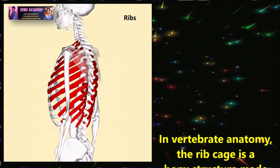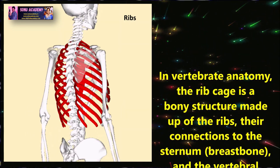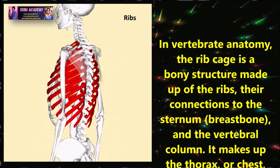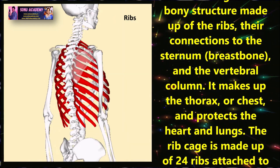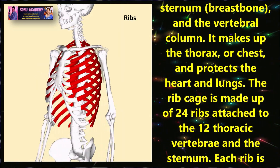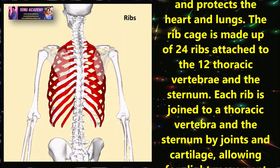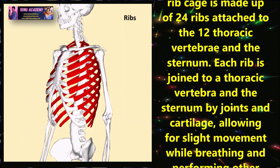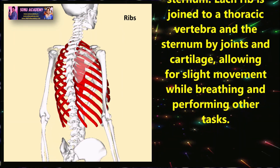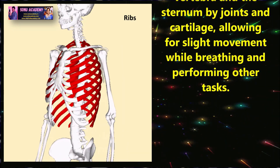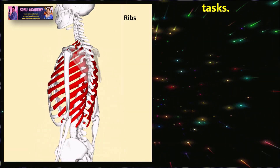Children, let us discuss about ribs. In vertebrate anatomy, the ribcage is a bony structure made up of ribs, their connections to the sternum and the vertebral column. It makes up the thoracic chest and protects the heart and lungs. The ribcage is made up of 24 ribs attached to the 12 thoracic vertebrae and the sternum. Each rib is joined to the thoracic vertebrae and the sternum by its joints and cartilage, allowing for slight movement while breathing and performing other tasks.